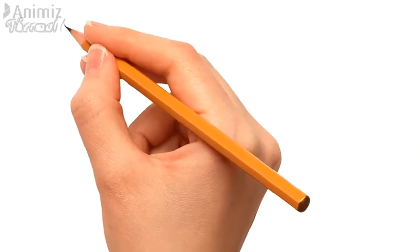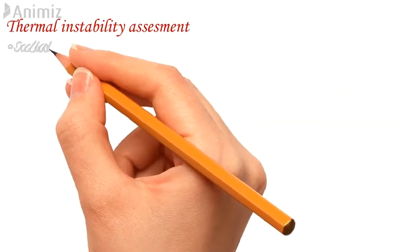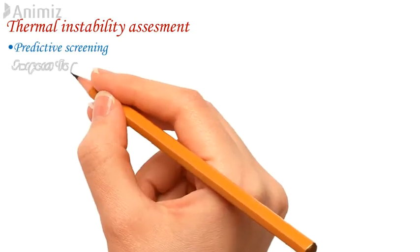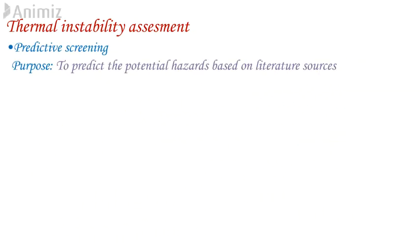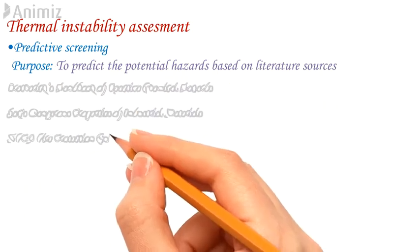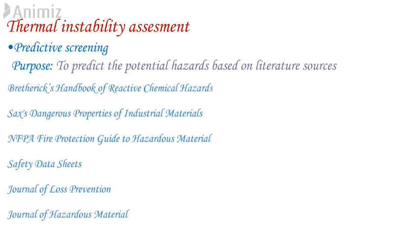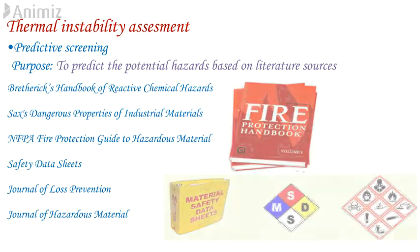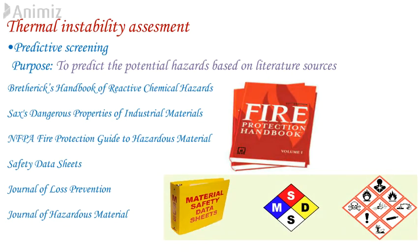The thermal instability assessment is done in three steps. First, predictive screening. The purpose is to predict the potential hazard based on literature sources. Some literature sources that can give preliminary information on reaction hazards include NFPA fire protection guide to hazardous materials, safety data sheets, Journal of Loss Prevention, Journal of Hazardous Materials, and proceedings of process safety conferences.